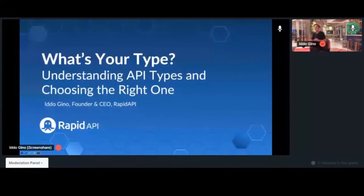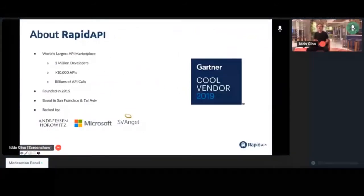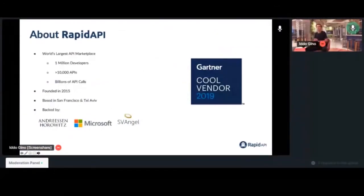Just to give some brief background about the company that I'm part of — we're Rapid API. We're actually the world's largest API marketplace, serving well over a million developers around the world, helping them discover and connect to over 10,000 APIs. We also power a lot of internal API stores for larger companies that realize they have a lot of different APIs laying around in their cloud and on-premise systems, and helping their developers make sense of those different APIs.